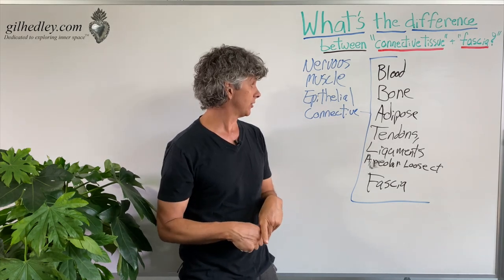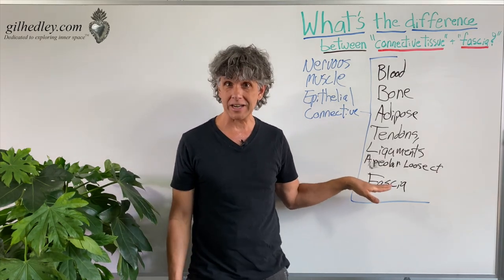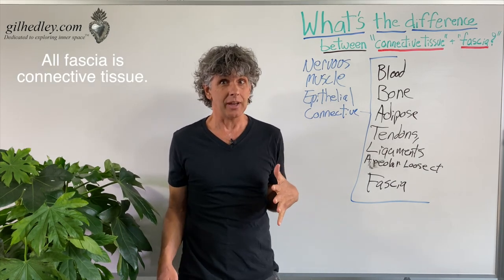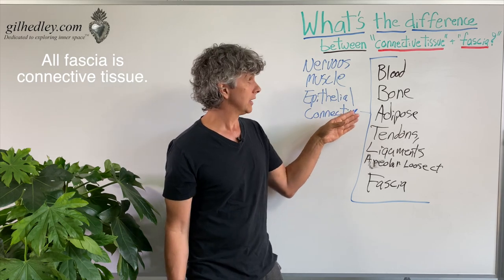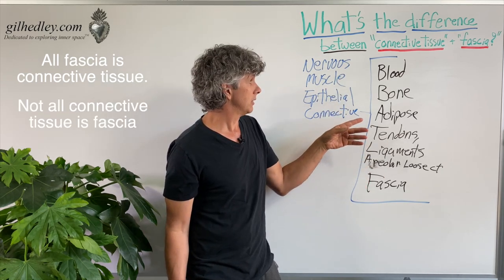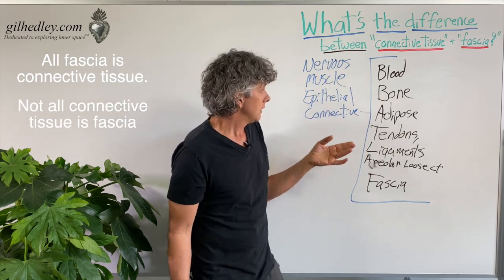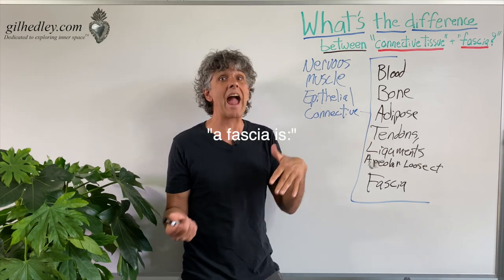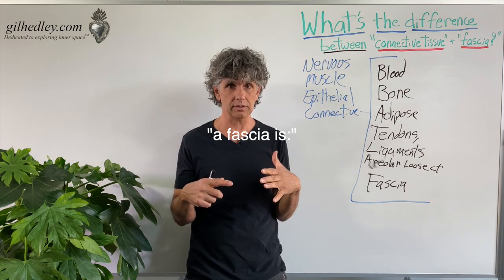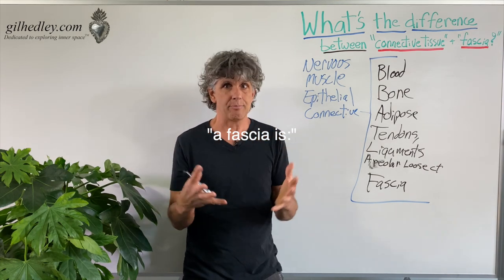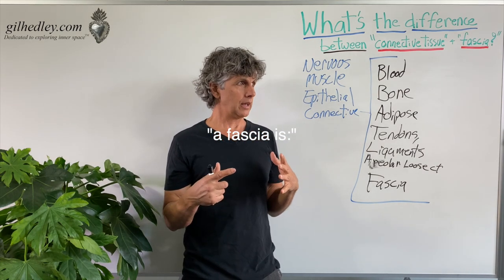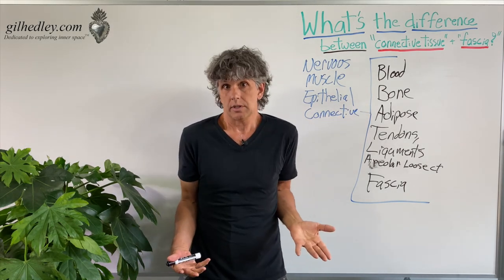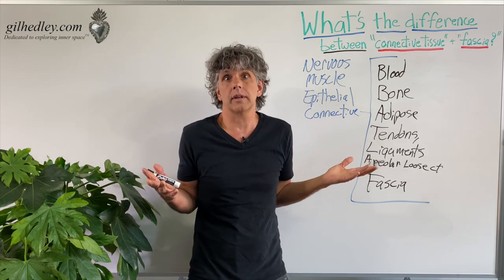We could say this: all fascia is connective tissue, but we can't say all connective tissue is fascia. Blood isn't fascia. A tendon isn't fascia. A fascia is an aggregate of connective tissues that wrap other tissues and can be dissected into sheets. I can't dissect a bone into a sheet, so it just doesn't fall into that box.